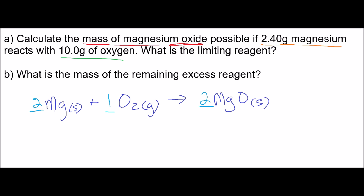All right, this is all mass, so we'll have to get the molar masses of all of these. It's not too bad because these are small compounds. Let's get right into it — with magnesium, we're given 2.40 grams of Mg, and we want to convert that to moles. Once we have moles, we can convert it to anything else we wish.